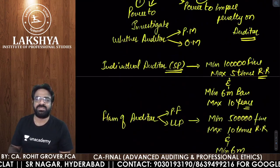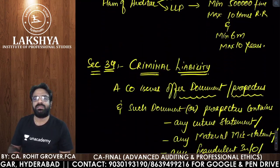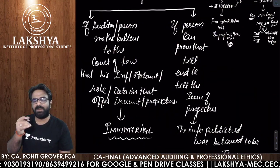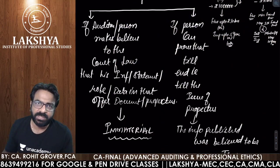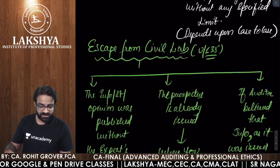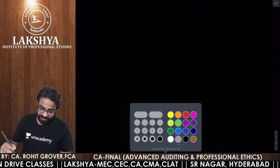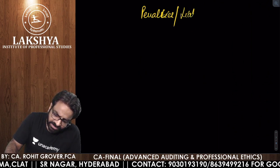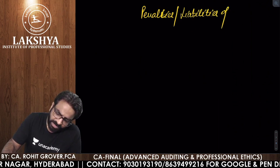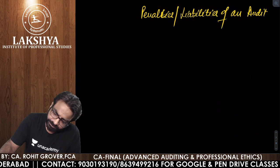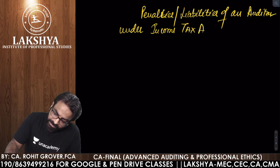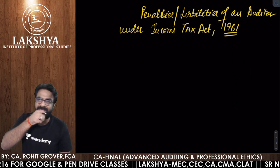With that, penalties under Sections 132, 147, 34, and 35 are over — our Companies Act penalties are complete. Now let us wind up this chapter by doing the penalties under the Income Tax Act 1961.